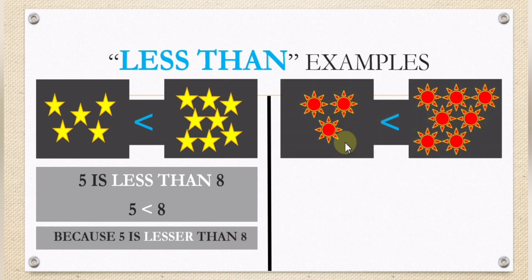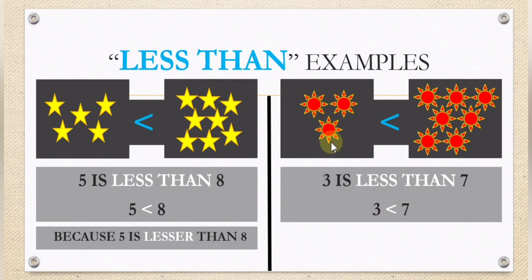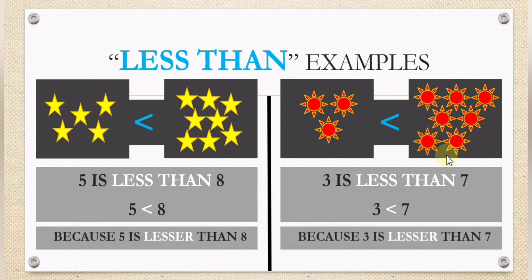In the second example, how many suns? One, two, three. In the second box: one, two, three, four, five, six, seven. There are seven suns inside the second box. If we are going to read it: three is less than seven. Why? Because three is a lesser number compared to seven, or three is lesser than seven.